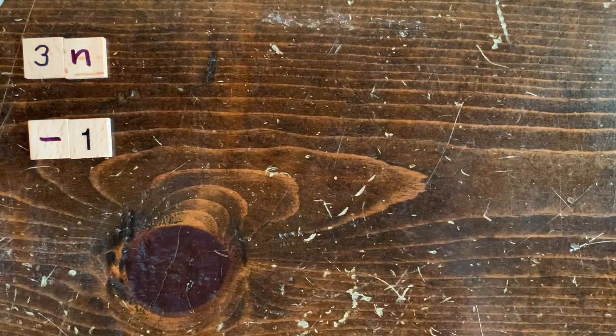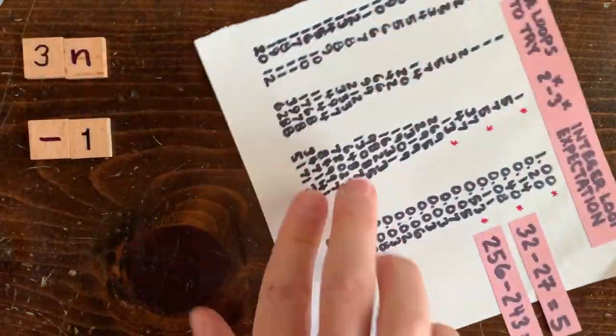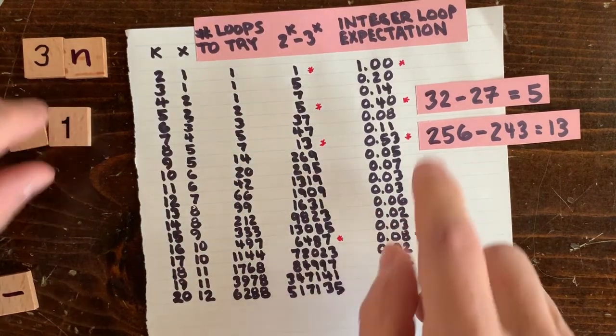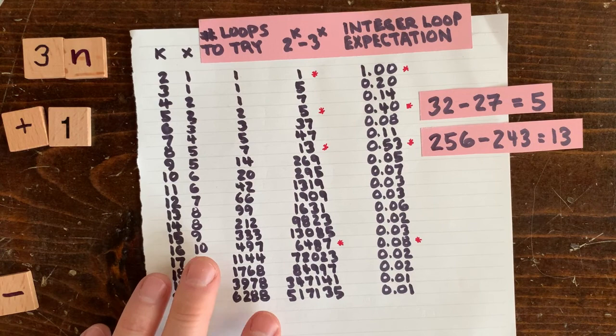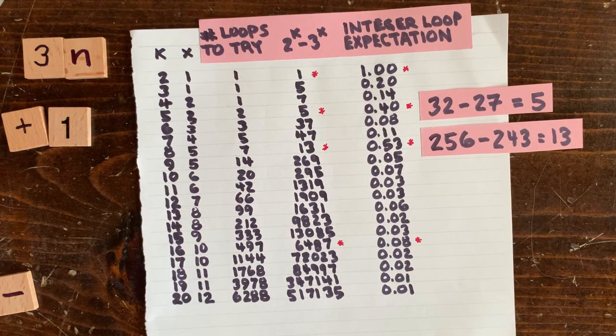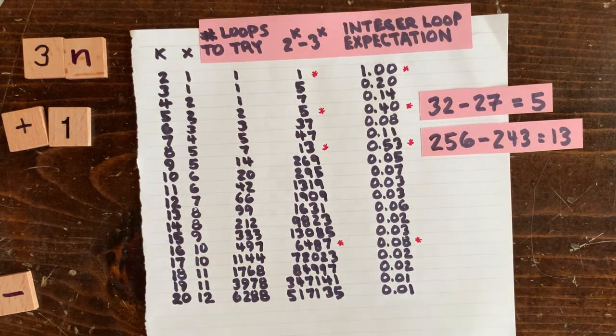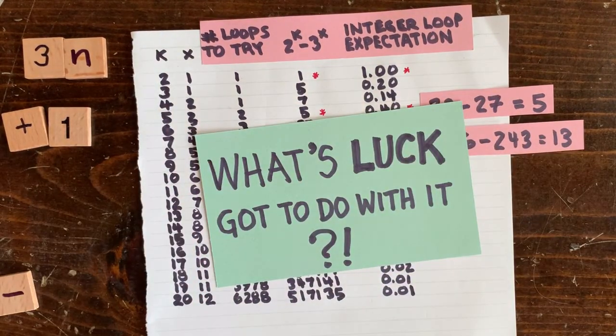So now let's go back to the 3n plus 1 chart. Here, the best chances are k equals 2, k equals 5, and k equals 8. But only k equals 2 is the valid loop. That's the 1, 2, 1, 2 loop. We never get lucky with any other loop length. Of course, we're playing fast and loose with the word lucky here.